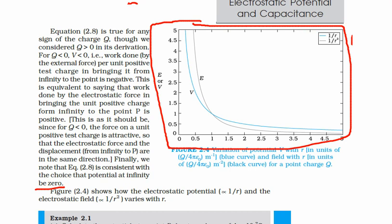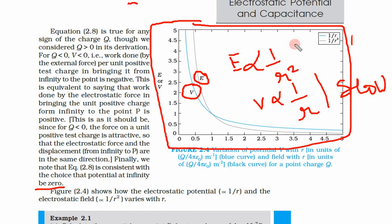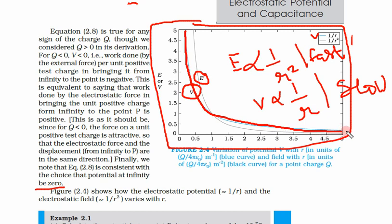This figure shows how electric field E and potential V change with distance. E is proportional to 1 over r squared, while potential is proportional to 1 over r, so potential decays much slower. The blue line is potential — it decays very slowly and reaches zero only at much higher distances, while electric field decays very fast.